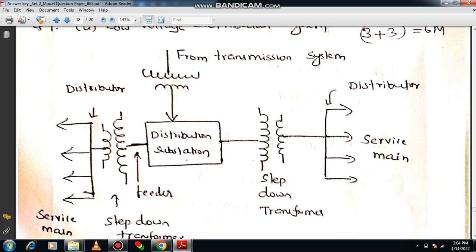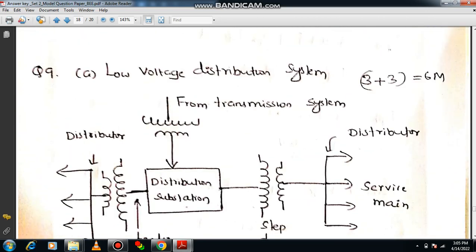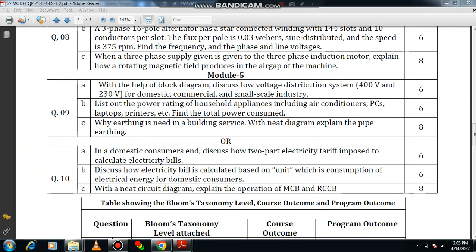230 volt is applicable for domestic consumers and 400 volt is used for industry — especially industry will take 11 kV. At the end of distribution there are two stages: 400 volt and 230 volt. From 400 volt, with a star connection, you can take three single phases — that is a speciality of the three-phase four-wire system. A brief explanation with the block diagram will get you full six marks.